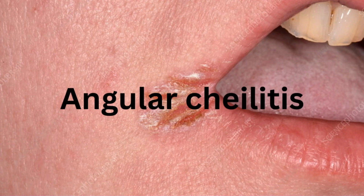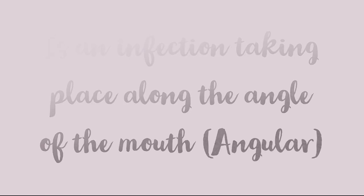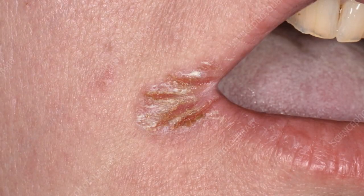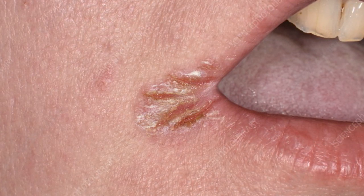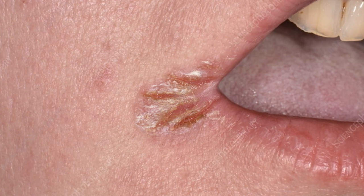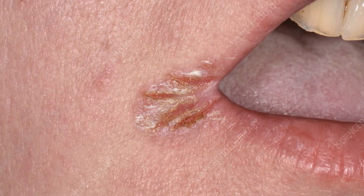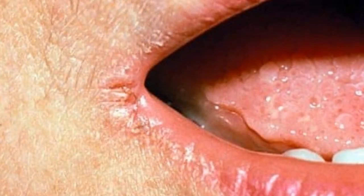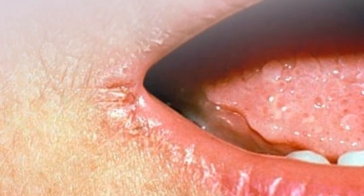Angular cheilitis is an infection that takes place along the angle of the mouth. As the name suggests, it occurs at the corners or at the angle of your mouth. As you can see, at the angle of the mouth we have blistering that is red in color and it is painful.